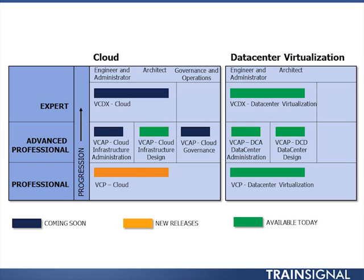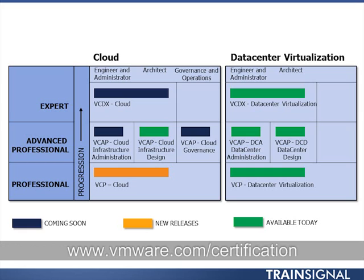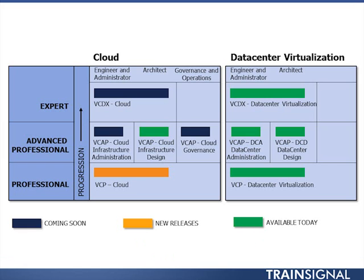Note the color coding on the diagram: green certifications have been available for some time or are available today; new releases are shown in orange, such as the VCP Cloud; and certifications coming soon are also indicated — check the VMware certification website for current availability. The diagram also highlights how heavily VMware is moving into cloud certification. They now have an entire cloud computing track with more certifications than the data center virtualization track, including the cloud infrastructure administration VCAP, the cloud infrastructure design VCAP, the cloud governance VCAP, and the VCDX on cloud computing.